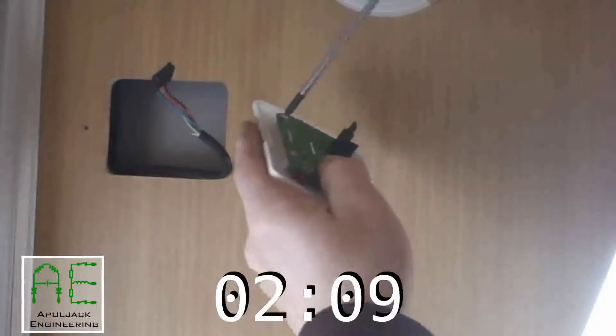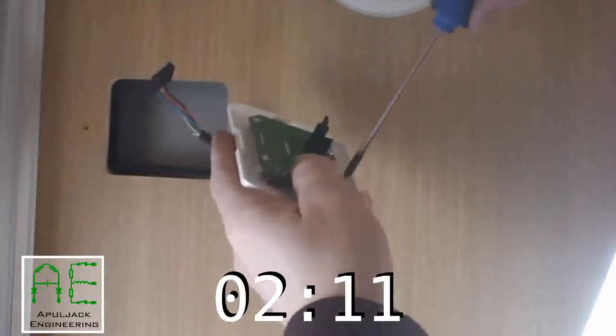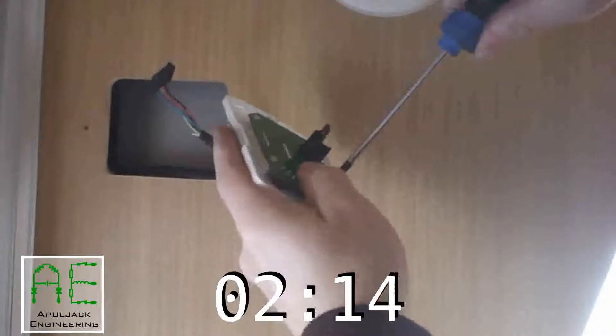To tighten them up, just literally nip them up—don't need to be tight at all, otherwise you'll strip the threads in the plastic.